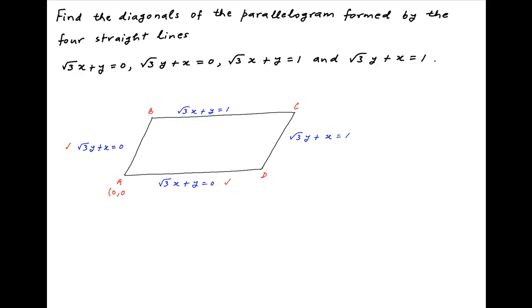The vertex A is the point of intersection of lines AB and AD, both of which pass through the origin. Therefore, the vertex A is (0, 0).